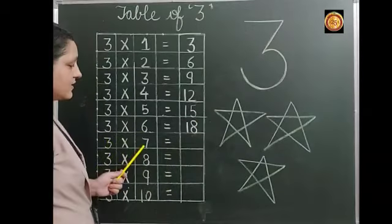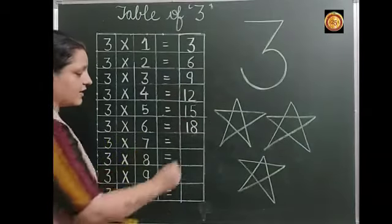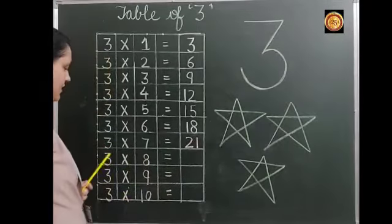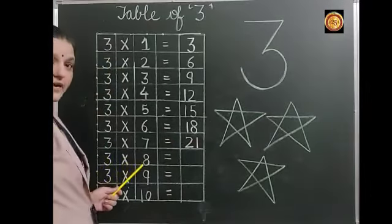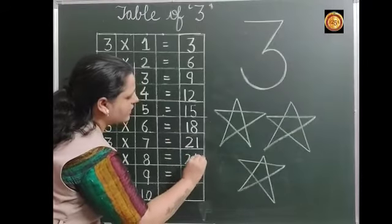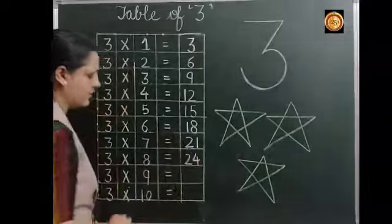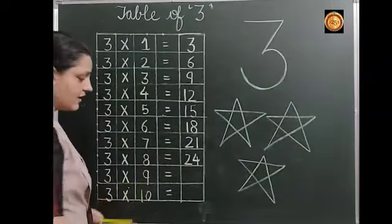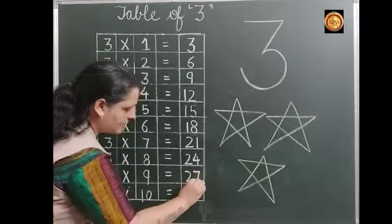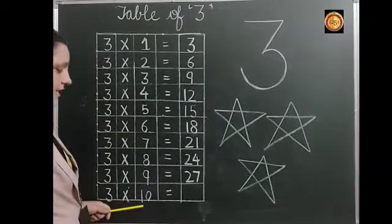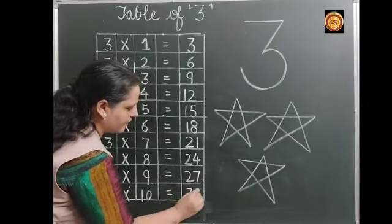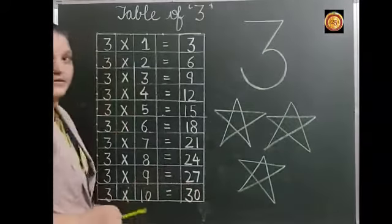3 7's are 21. 3 8's are 24. 3 9's are 27. 3 10's are 30.